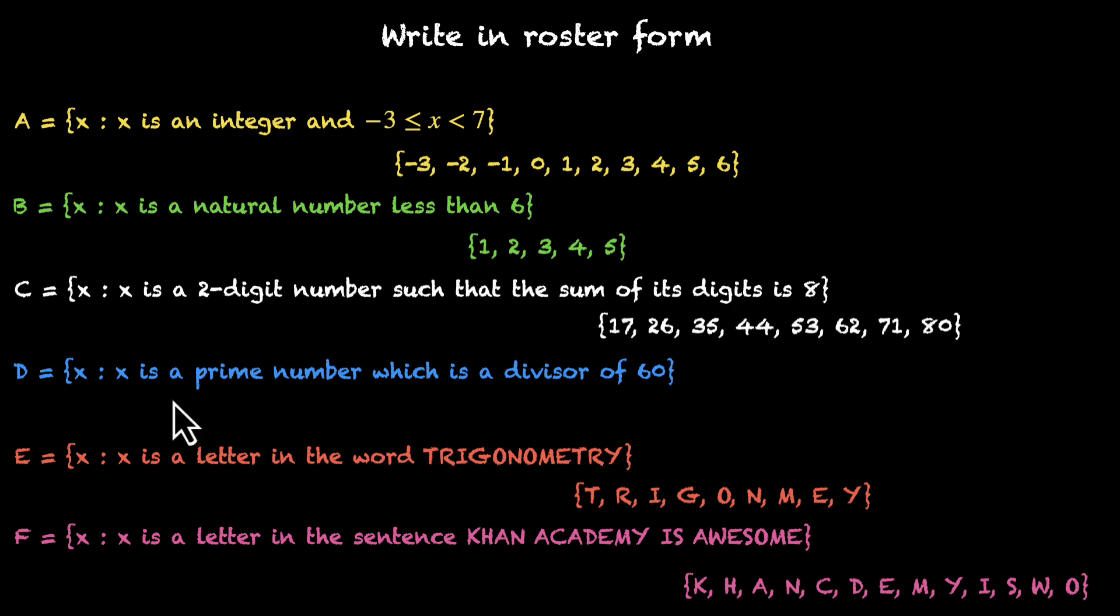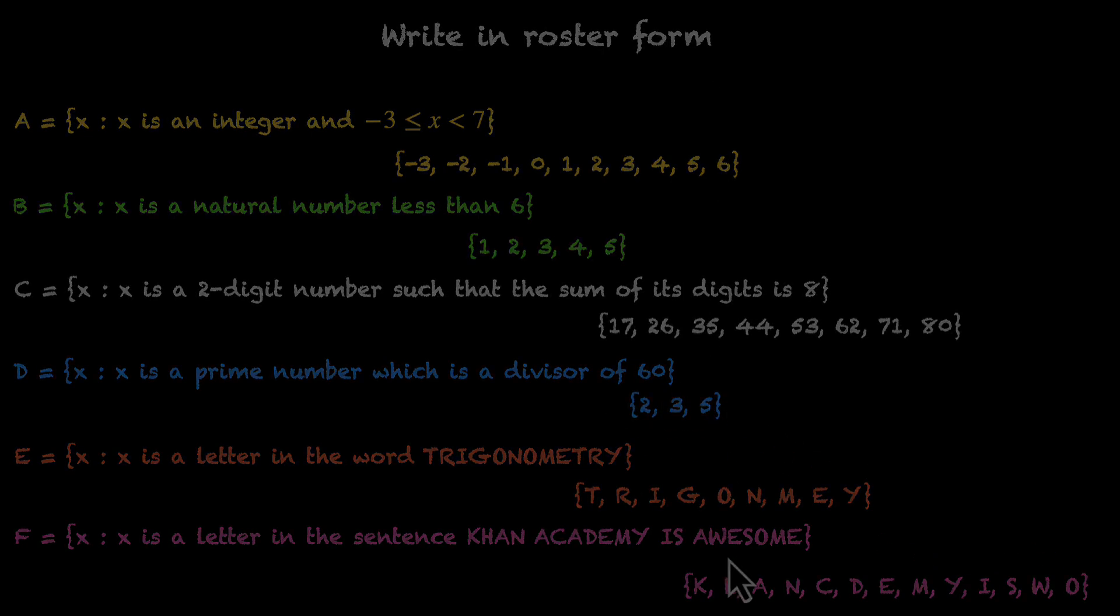Last one. X is a prime number which is the divisor of 60. So we only need to look at the prime factors of 60. Well, 60 is 6 times 10. 6 is 2 times 3, so we have 2 and 3, and 10 is 2 and 5. 2 is covered, so we'll only take 5. So 2, 3 and 5, these are the only prime factors of 60, and with this, we're done with this problem.